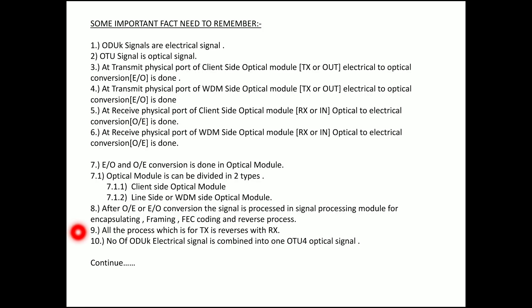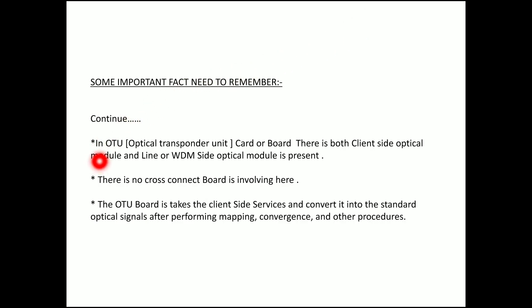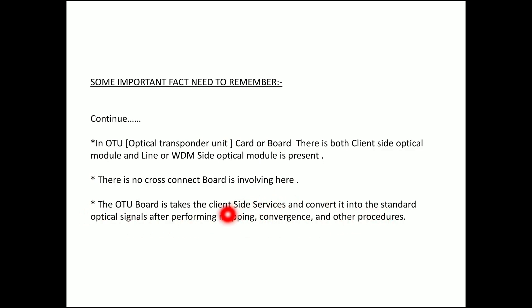A number of ODUk electrical signals are combined into the OTU4 optical signal. In the OTU optical transport unit card, both the client side optical module and the line-side or WDM side optical module are present, and no cross-connect board is involved. This is very important in the case of the optical transport unit. The OTU board takes the client side service and converts it into standard optical signals defined by the DWDM ITU-T standard lambda, after performing mapping, convergence, and other procedures.